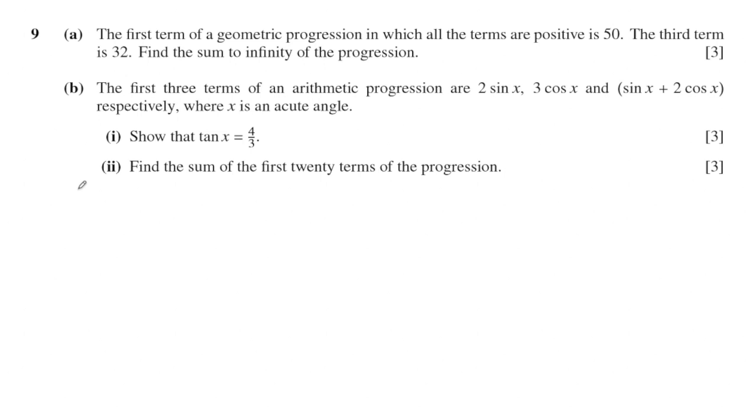The question is about sequences. The first term of the geometric progression in which all the terms are positive is 50. The third term is 32. Find the sum to infinity of this sequence.